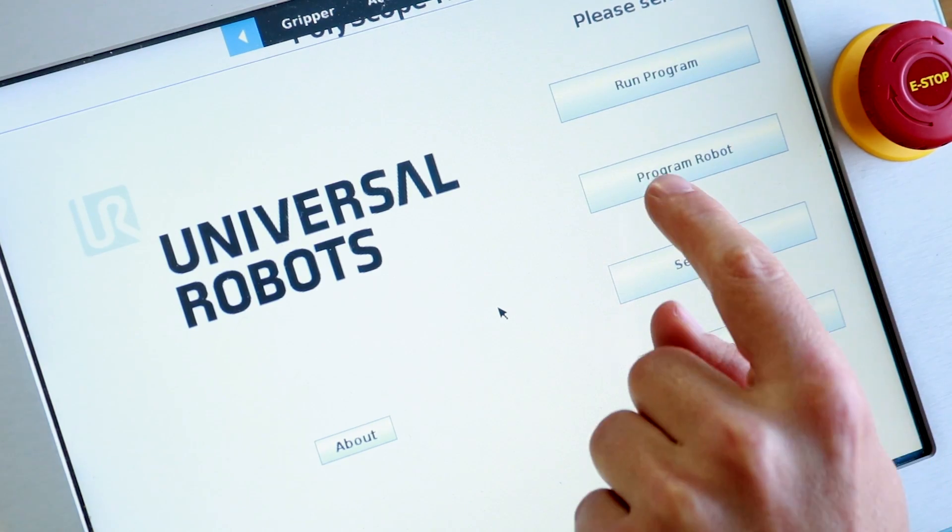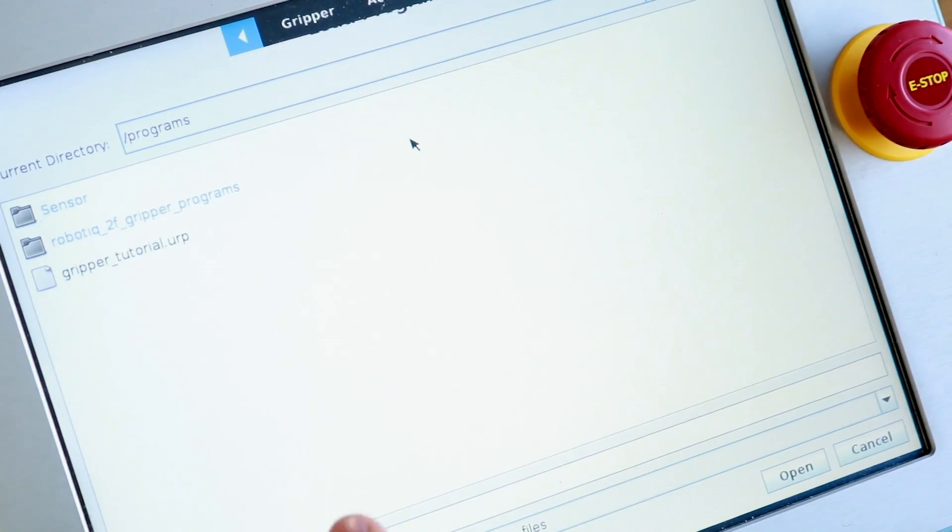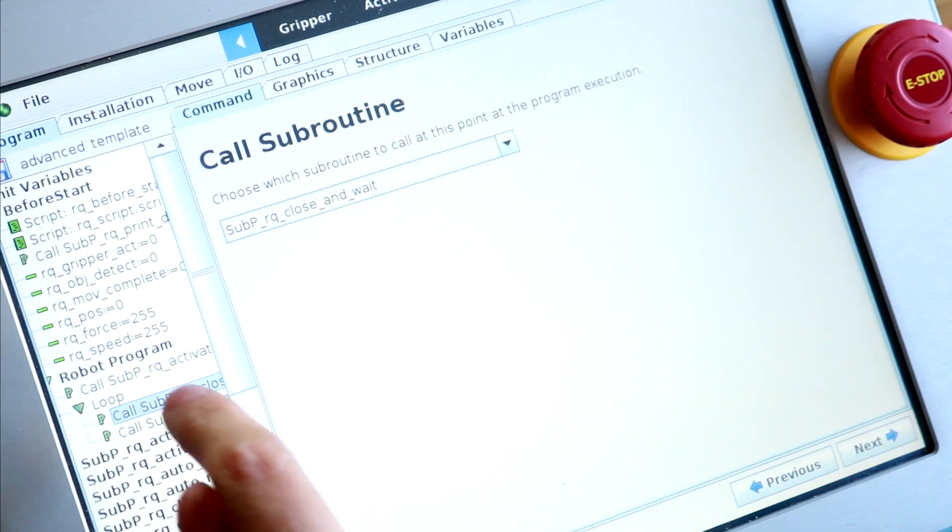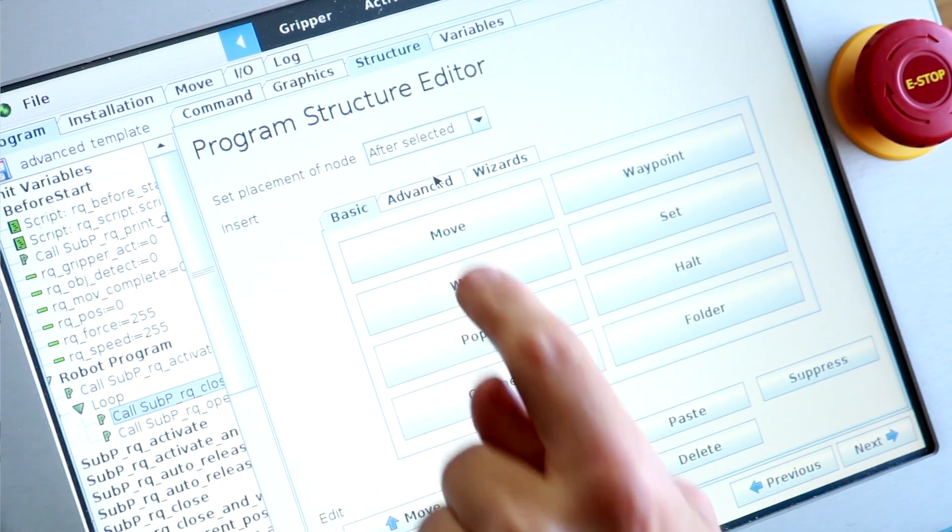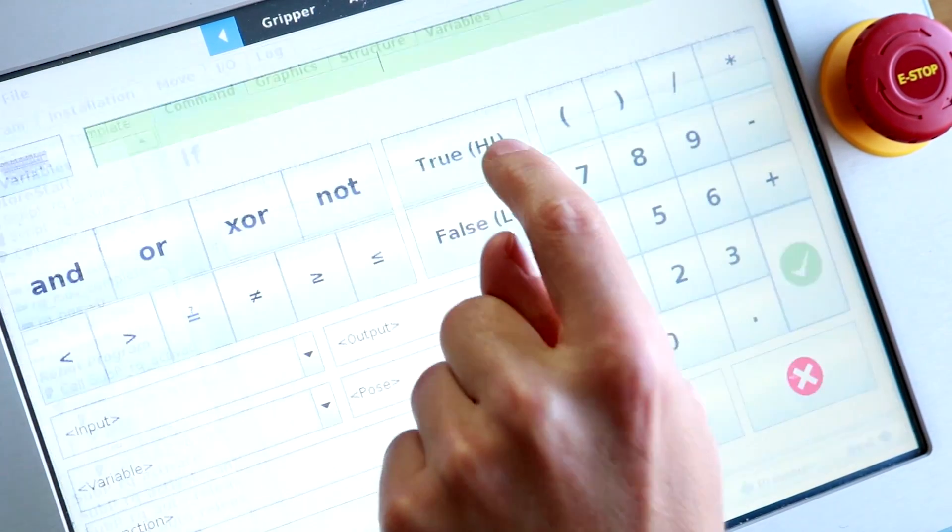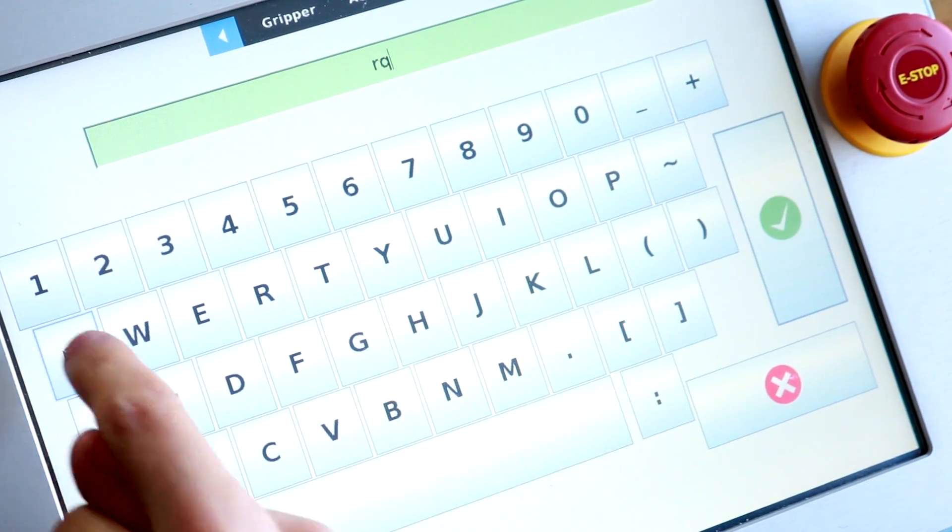Let me show you how it works. Open the gripper package advanced template. Insert an if statement. Inside the if, insert the object detection function RQ is object detect.